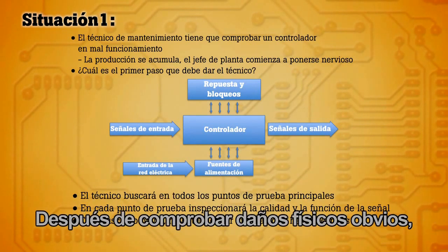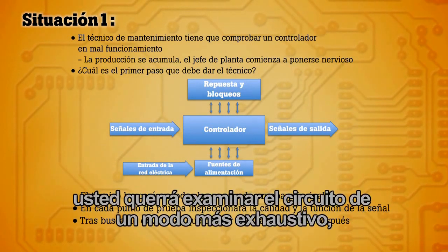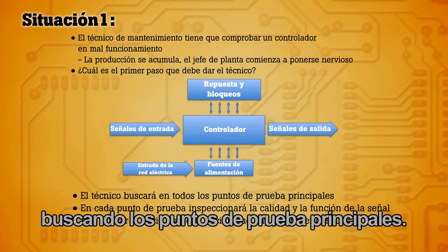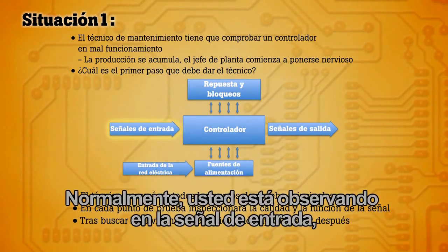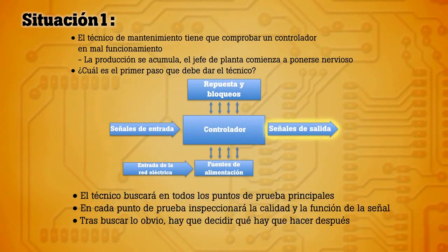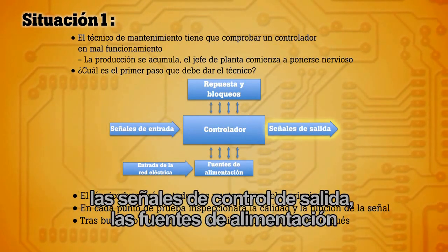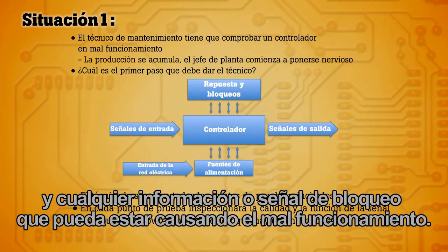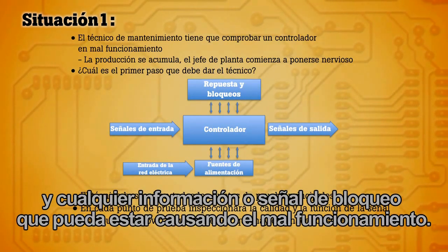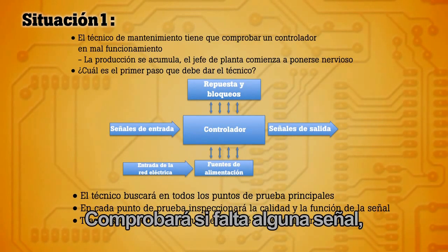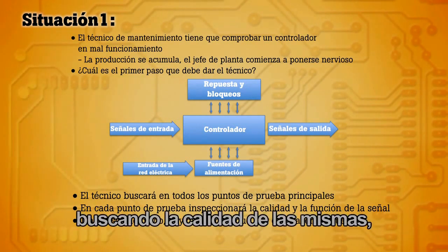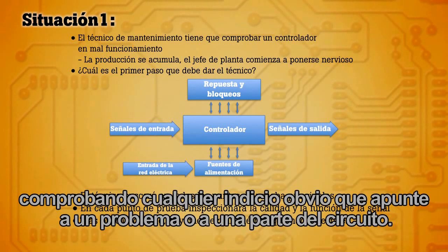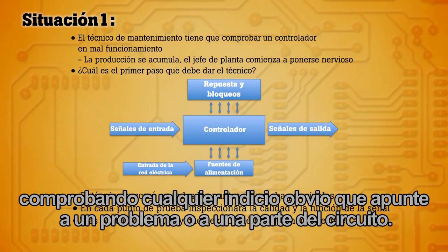After checking for any obvious physical damage, you'll want to take a look at the circuit at a high level, looking at key test points. Typically you're looking at the input signal, the output control signals, the power supplies, and any feedback or interlock signals that might be causing the malfunction. You'll be checking for any missing signals and looking at the quality of the signals, checking for anything obvious that could point you to a problem on any part of the circuit.